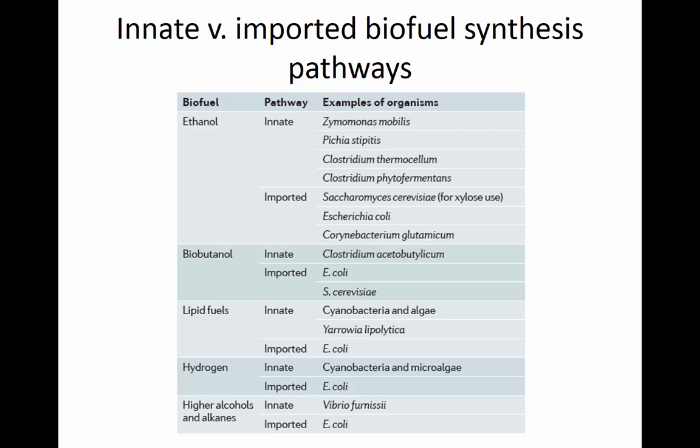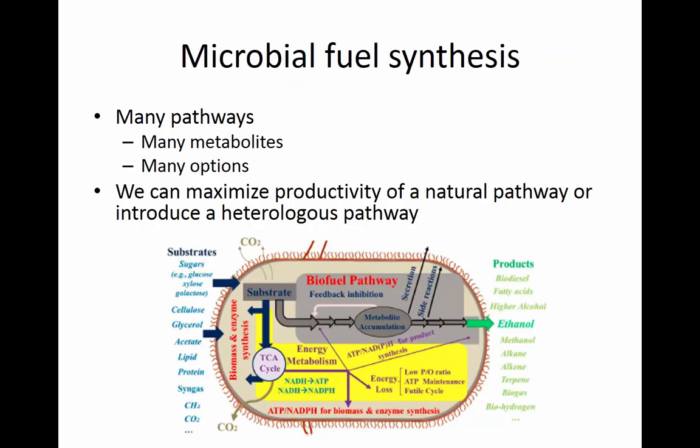For some organisms, depending on the organism, these are innate pathways — like for Saccharomyces cerevisiae and Zymomonas mobilis, they have innate ethanol production pathways. Clostridium acetobutylicum has an innate biobutanol production pathway. But many organisms, like E. coli, Corynebacterium, and others, can be used to import biofuel synthesis pathways — they can be microbial chassis used to make a new biofuel production organism.